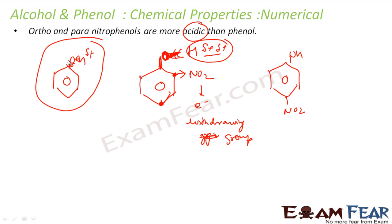So the chain is: phenol needs more electrons, oxygen needs to supply more, so oxygen withdraws more from hydrogen. Hydrogen gets more partial positive charge and is thus released more easily — making ortho and para nitrophenol more acidic than phenol.